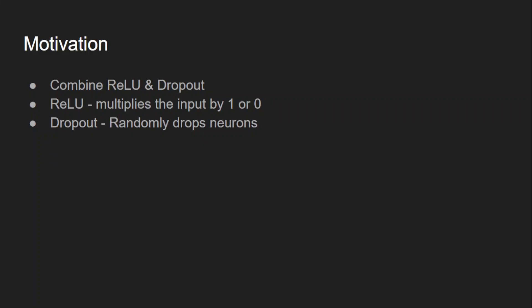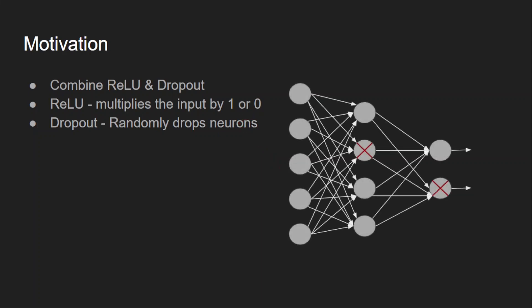We know that ReLU multiplies the input by zero or one depending on its sign. So if the input is negative it becomes zero, and if the input is positive it multiplies with one, meaning the same input is passed to the next neuron. So it is either multiplying with one or zero.